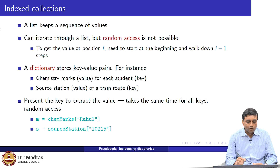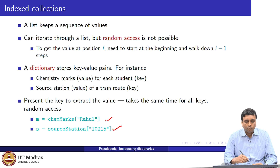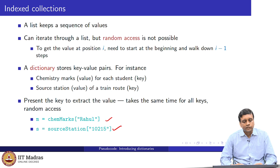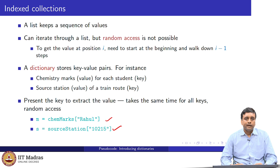This is done with the square bracket notation: we take the name of the dictionary and provide the key in square brackets, and what the dictionary returns is the value. We could store the chemistry marks of Rahul in this dictionary and extract it into a variable m. Similarly, if we wanted to know the source station of train 10215, we ask the dictionary for the value associated with key 10215, and it returns the name of the station, which we store in s.